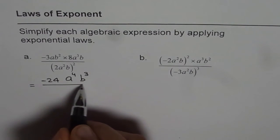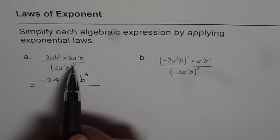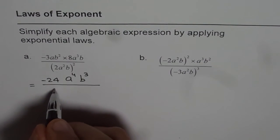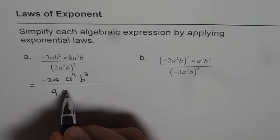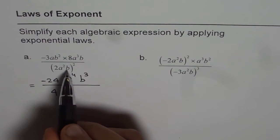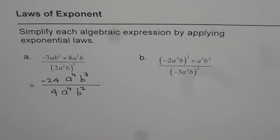And in the case of denominator, we have power of power. So it becomes 2 square. 2 square is 4, so we get 4 here. a squared times 2, they get multiplied, so we get a to the power of 4. And for b, if nothing is mentioned, you know it is 1. So 1 times 2 is 2, so we get b squared. So that is the first step.